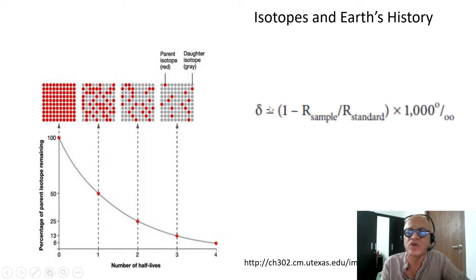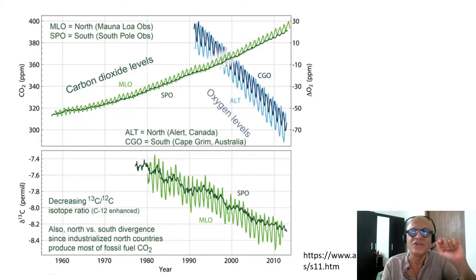Nonetheless, all that story boils down to defining something called a delta, where you typically have a standard for the particular isotope like C13 or oxygen 18 and so on. Then you have a sample that you're trying to figure out how old it is or where it came from. This is the formula you would use: 1 minus R sample divided by R standard times 1000, because these are typically very small numbers. So instead of parts per hundred, which is percent, we use parts per thousand, or parts per mil.